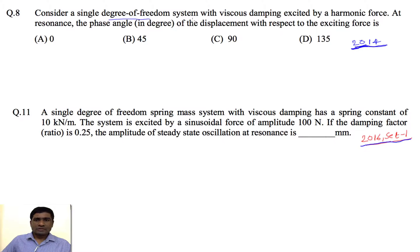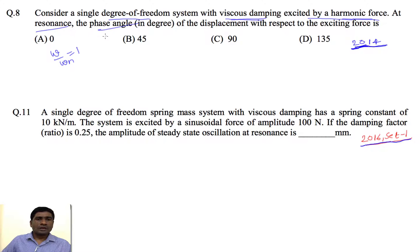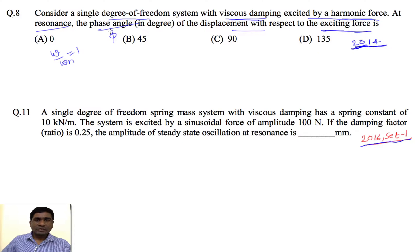We have a single degree of freedom system with viscous damping and a harmonic exciting force. At resonance, the frequency ratio r = ω/ωₙ equals 1. We need to find the phase angle of the displacement with respect to the exciting force — specifically, what the phase angle between the displacement and the exciting force is at resonance.